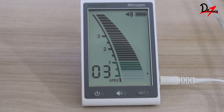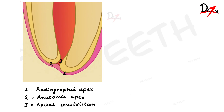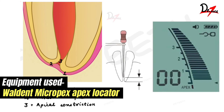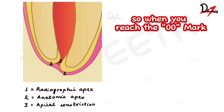Insert the file slowly into the canal and stop when you hear the device signal change or see a visual change on the screen — you will get an indication when the file tip touches the apex. In the image, you can see the cemento-dentinal junction, which is where the pulp tissue changes into the apical tissue; it is the most ideal physiological apical element of your working length, referred to as the minor diameter. However, the cemento-dentinal junction and the minor diameter do not always coincide, particularly in older teeth where cementum deposition alters the position of the minor diameter. The double zero display on the device means the major apical foramen has been reached, so you must reduce the file length by 0.5 to 1 mm to remain within the minor constriction.